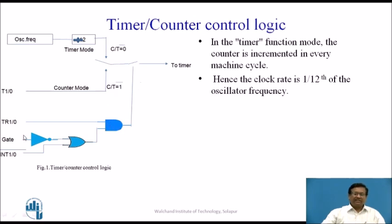If the Gate bit is 0, then only this bit will be 1 and the AND gate output will be 1. This TR bit is used to switch on and off this switch. To control the operation of this switch by an interrupt, Gate must be 1. In the timer function mode, the counter is incremented every machine cycle. A machine cycle has 12 T-states; hence the clock rate is 1/12th of the oscillator frequency.